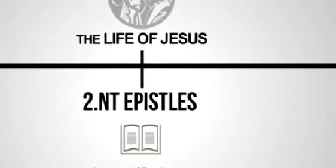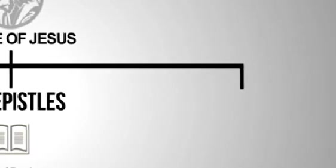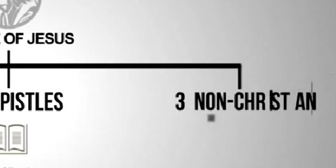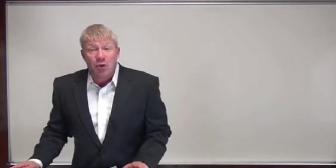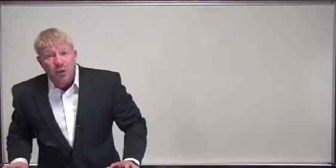The third type of historical source for the life of Jesus are the non-Christian documents — documents outside of the New Testament, written by non-Christians — writers like Josephus, Tacitus, Pliny, Suetonius, and a few others. So those are the three main categories: the Gospels, the New Testament Epistles, and the non-Christian writings.